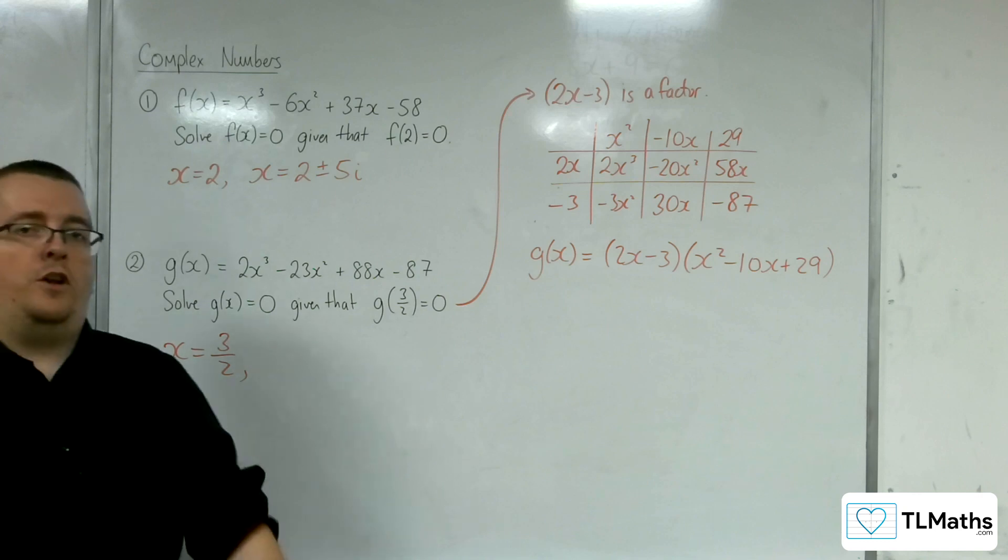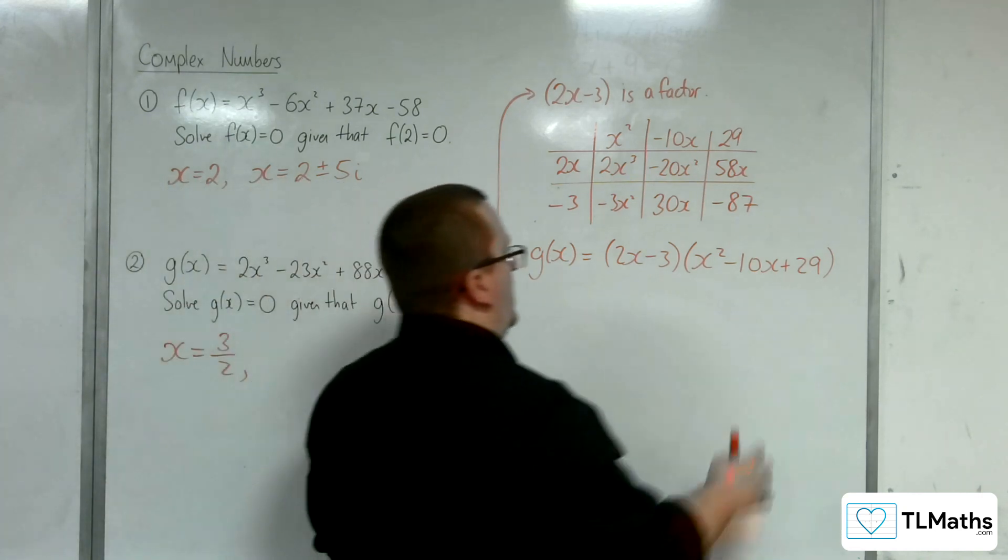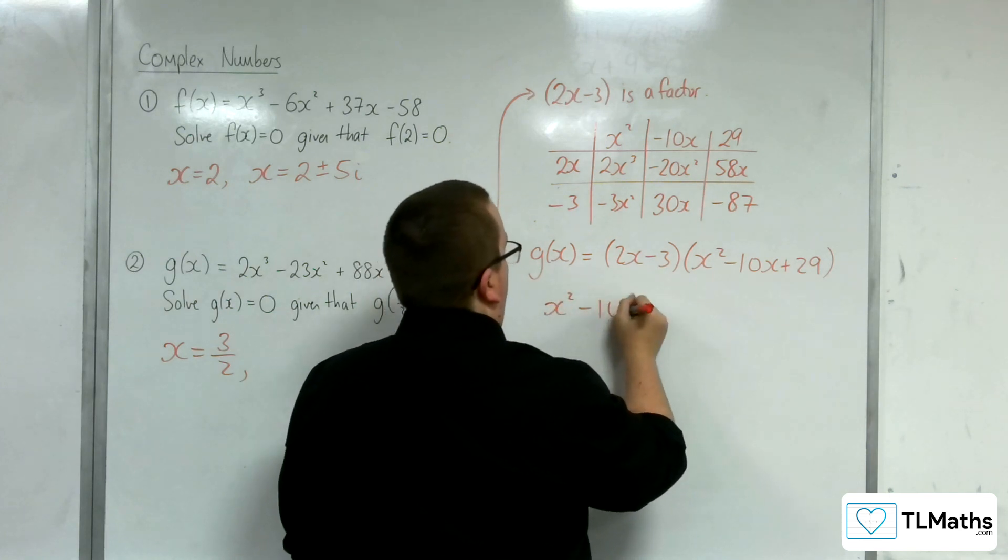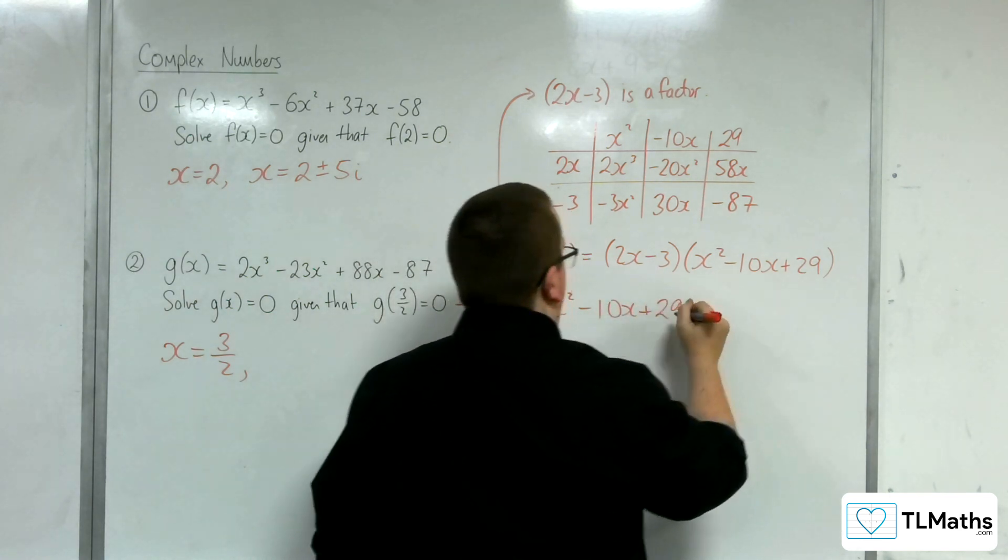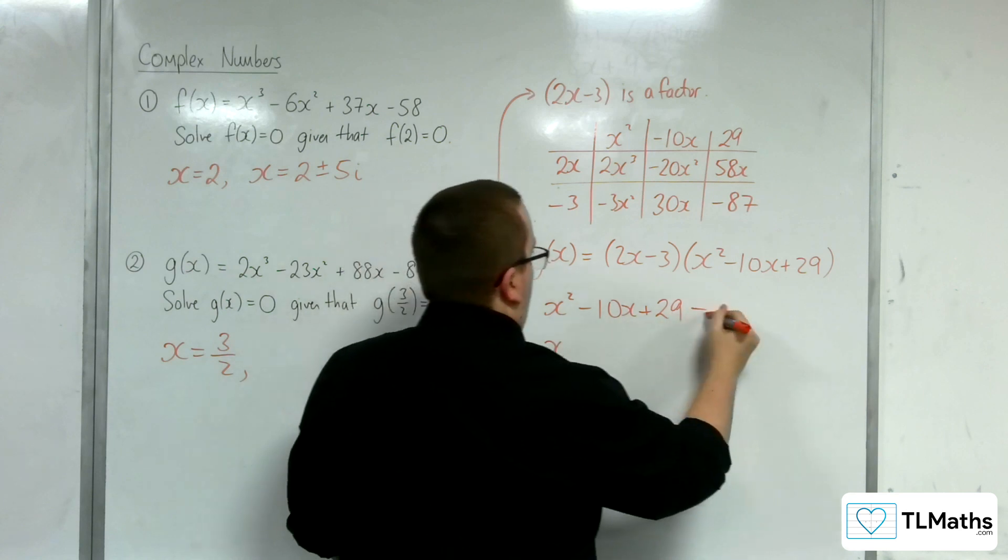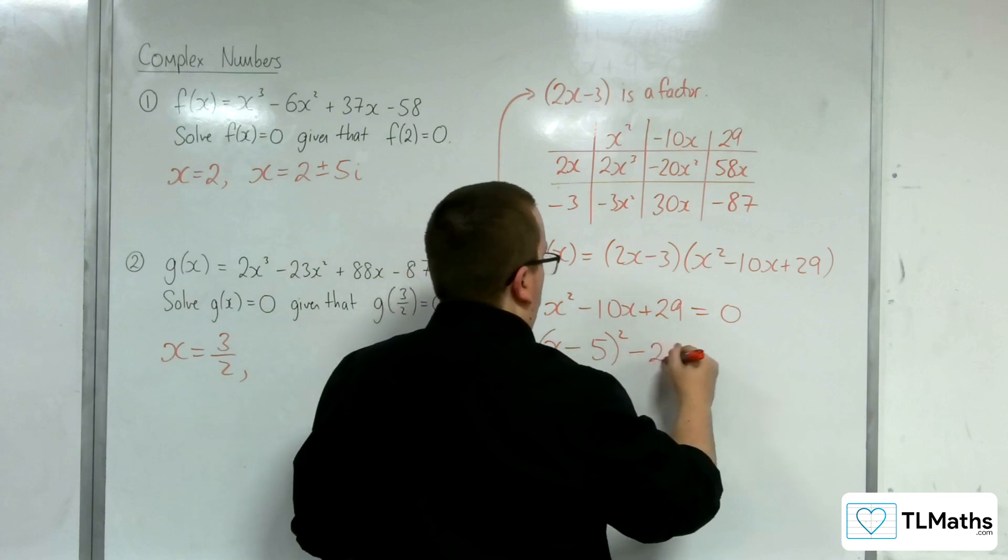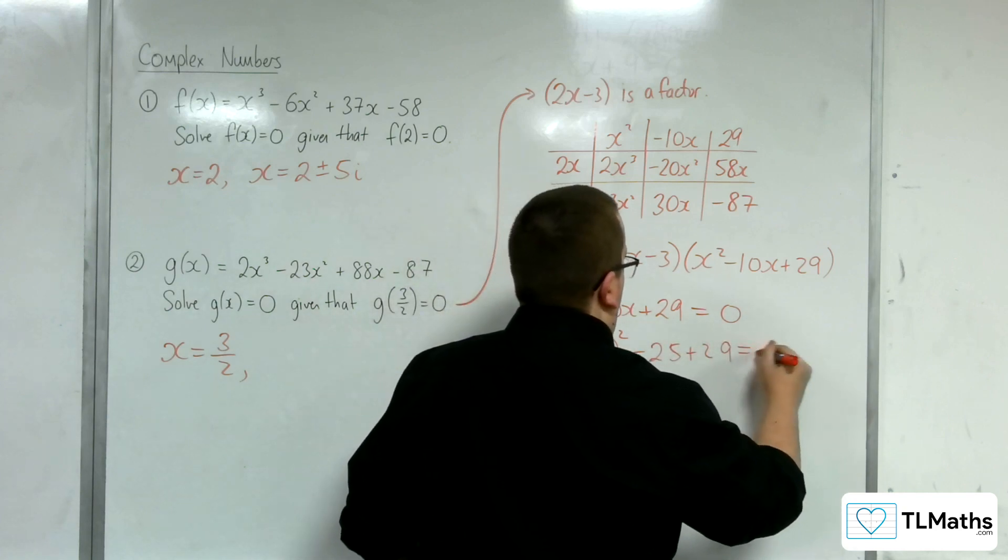But what are the complex solutions? So, they're going to come from this quadratic being solved. x² - 10x + 29. So, if all equals 0. So, if I complete the square on this, (x - 5)² - 25 + 29 = 0.